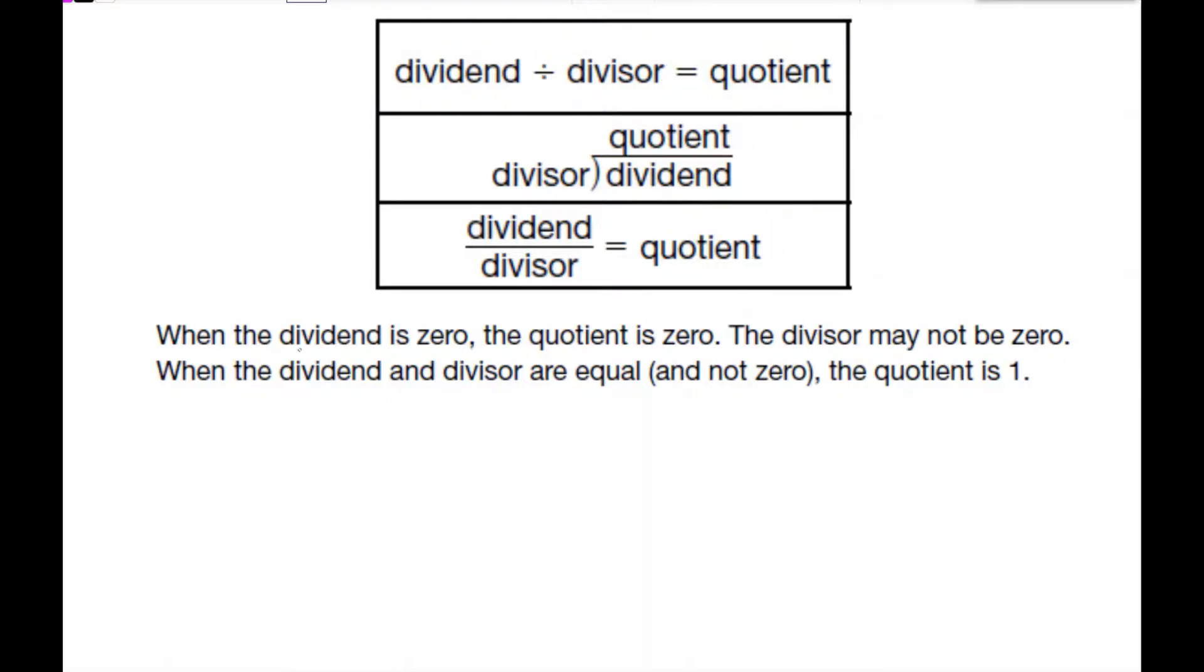When the dividend is zero, the quotient is zero. The divisor cannot be zero because we can't divide by zero. When the dividend and the divisor are equal and not zero, the quotient is one. So if I have eight and I divide it by eight, my answer is going to be one. If I have zero and I divide by eight, my answer is going to be zero.